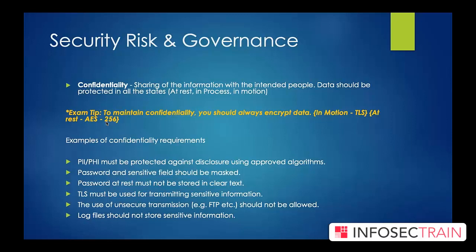What exactly are we trying to protect? It's important as an organization to understand the crown jewels. PII — personally identifiable information — and PHI — protected health information — must be protected against any disclosure. These are the crown jewels of most organizations. You might also want to include PCI information like card data.